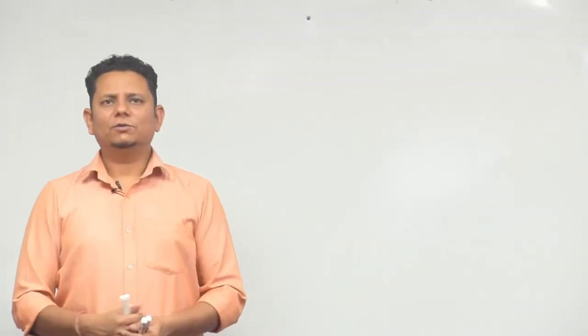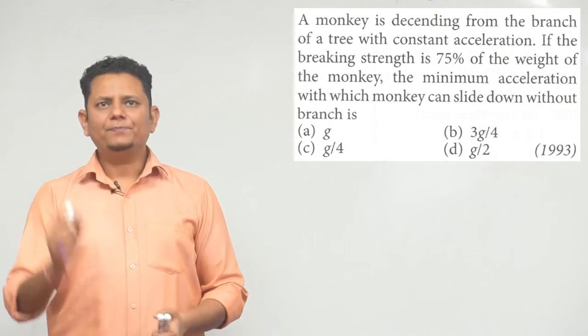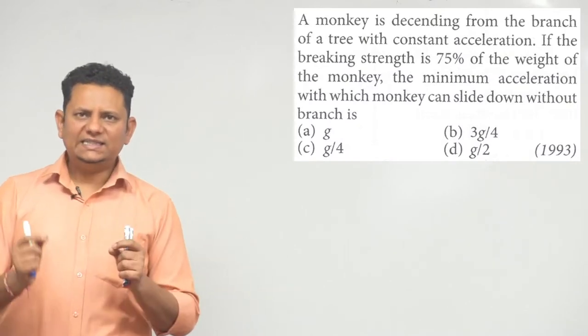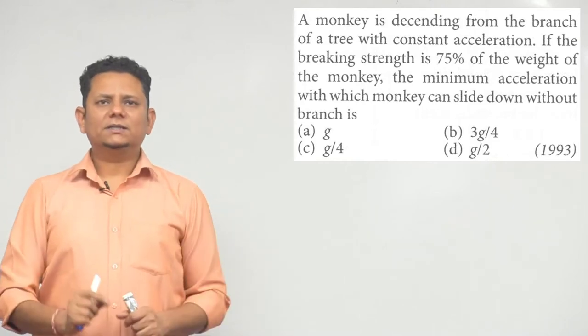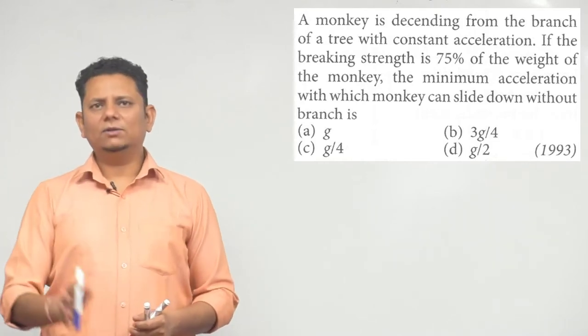Next question. A monkey is descending from the branch of a tree with constant acceleration. If the breaking strength is 75% of the weight of the monkey, what should be the minimum acceleration with which the monkey can slide down the branch? This is my question.